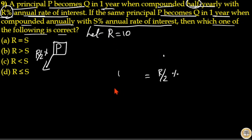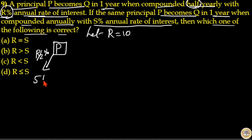For the first six months, interest received is equal to R by 2 percentage. Since R is equal to 10, that means 5 percentage of the principal is added to the principal for the first six months.